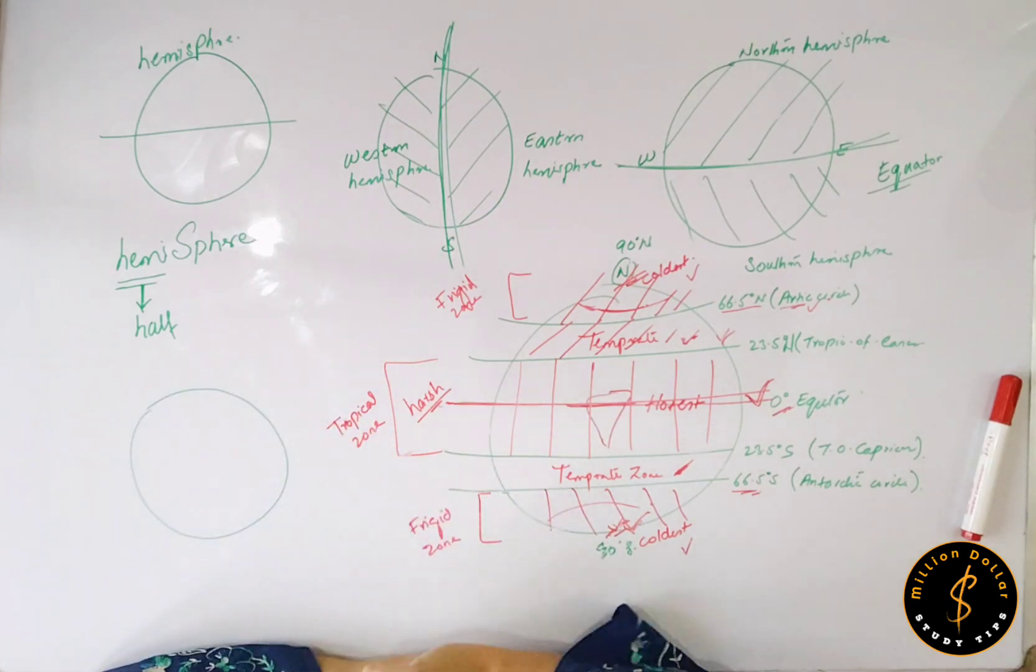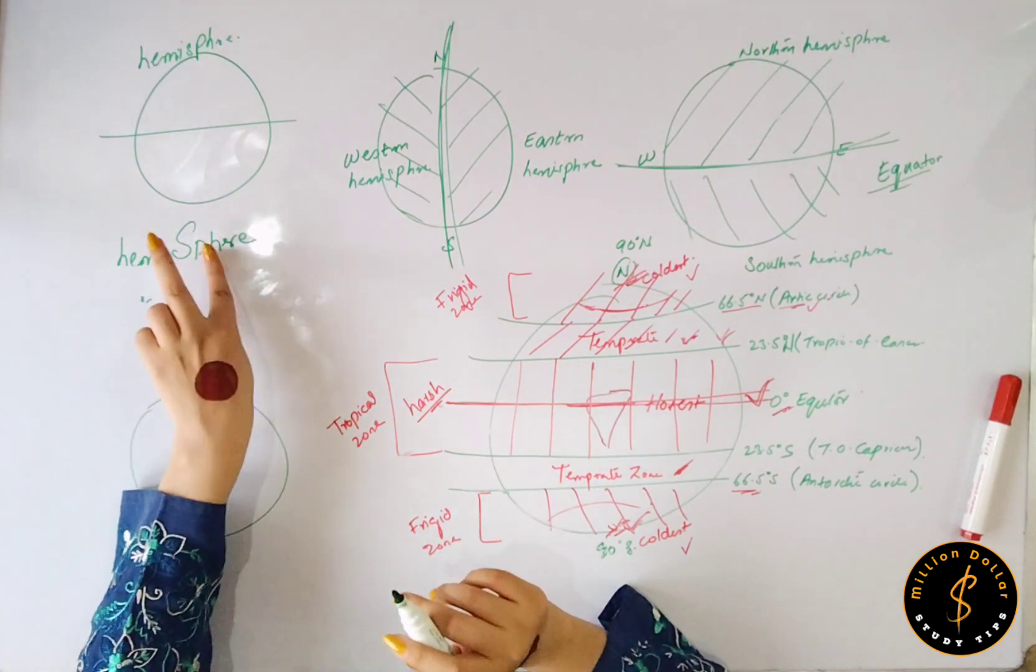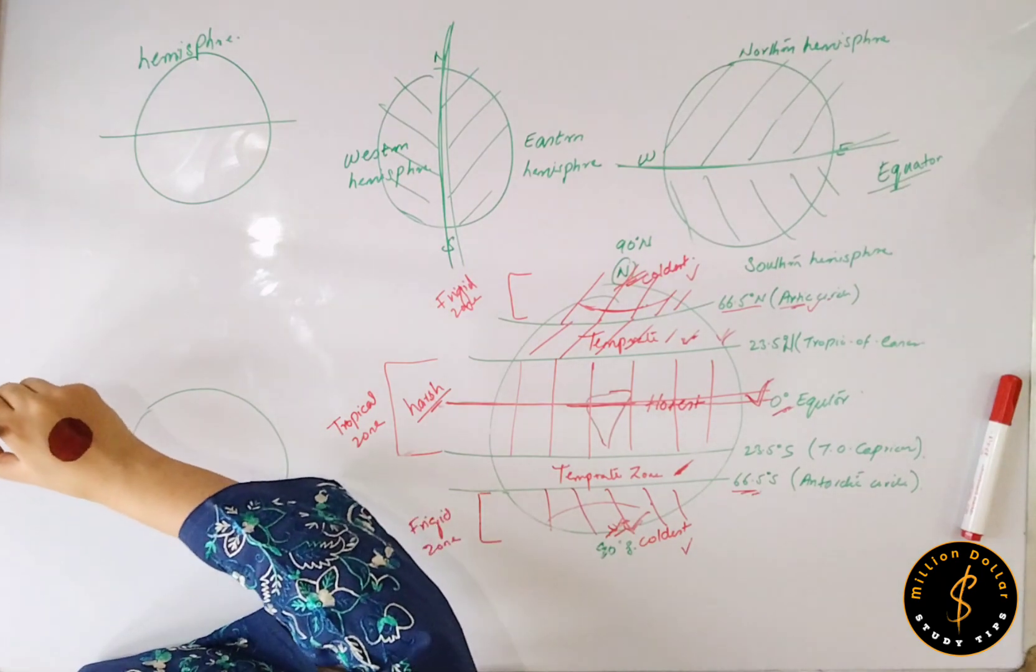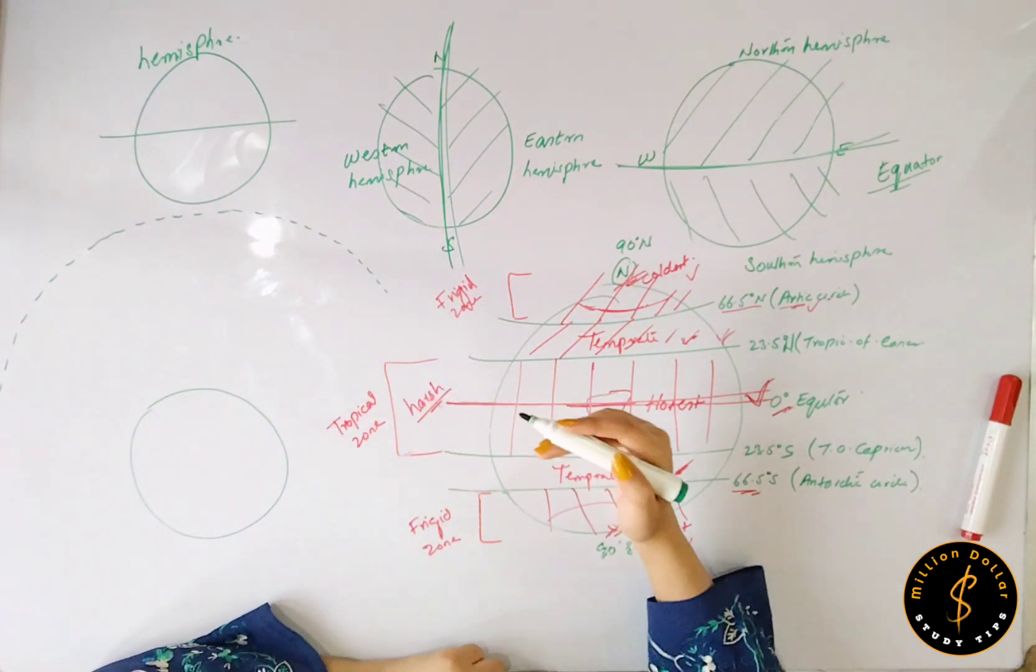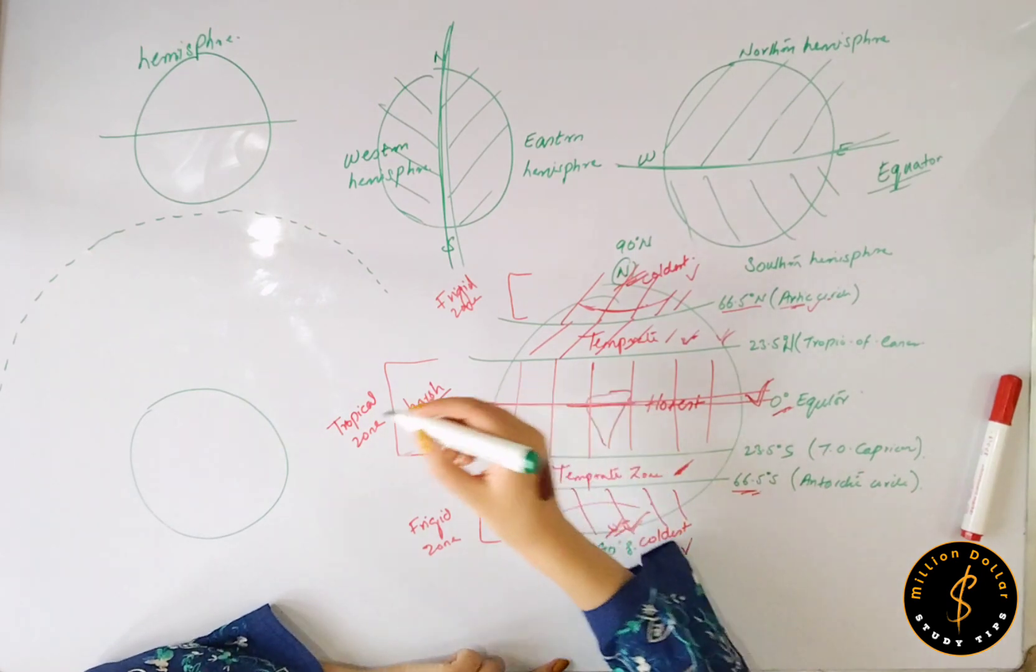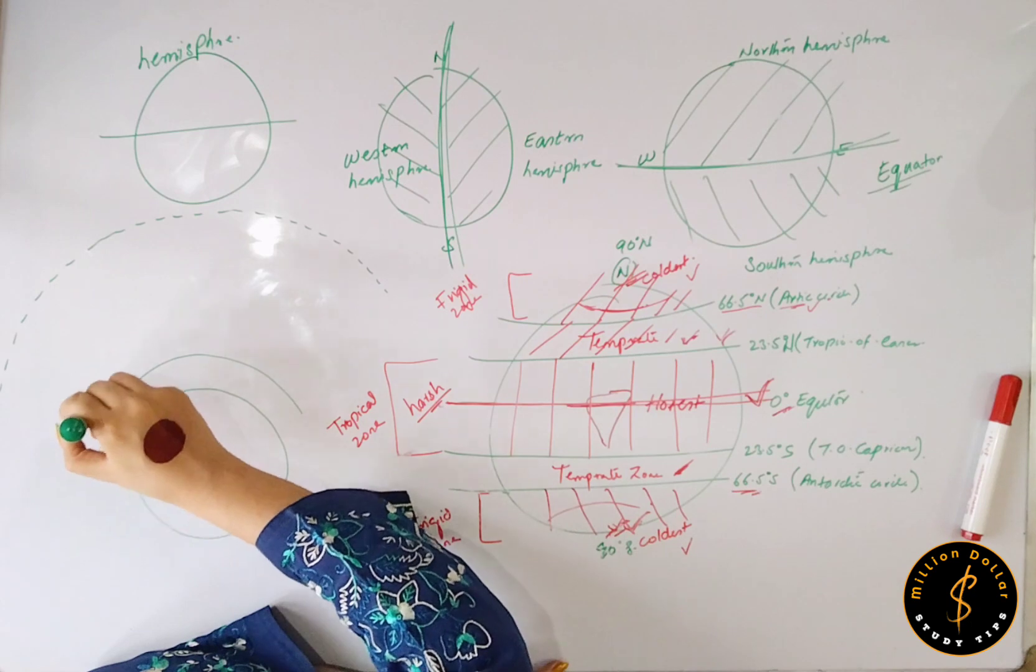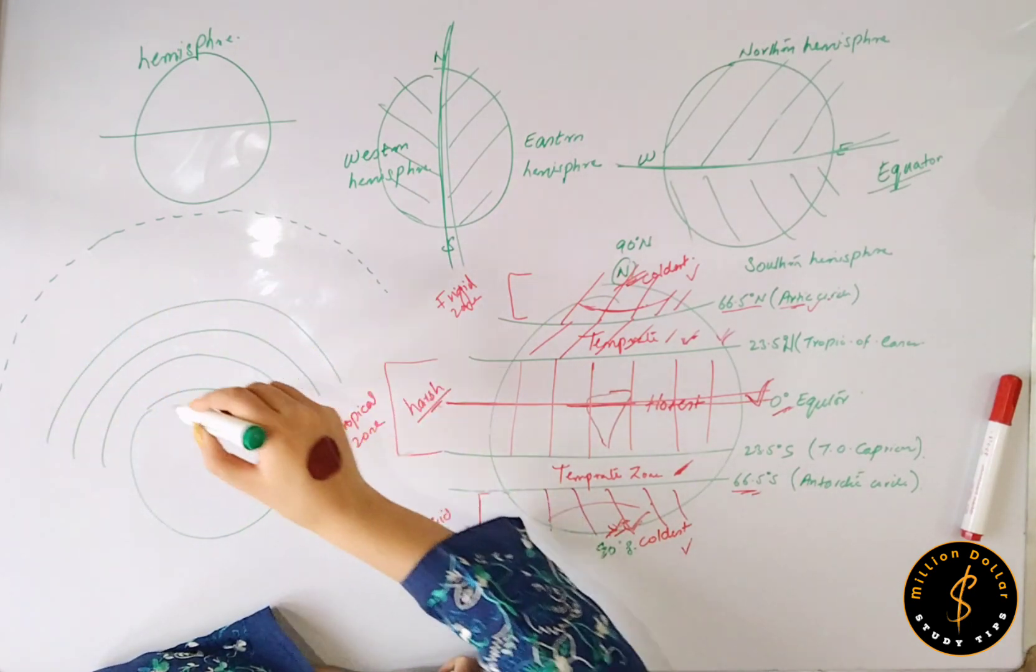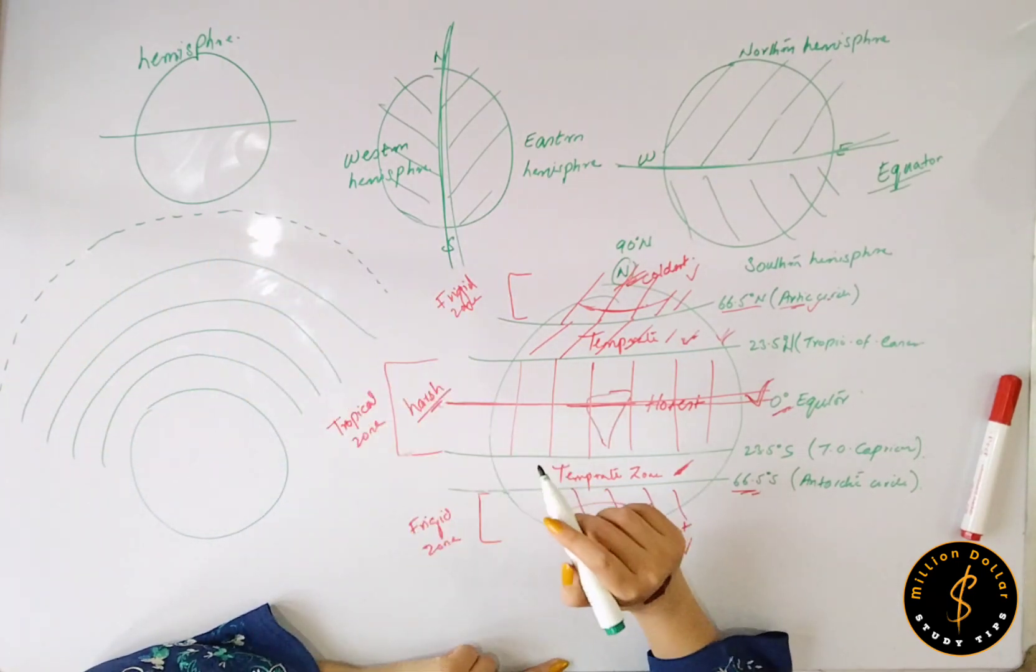This is your planet Earth. We divide the atmosphere into how many layers? Let's suppose this is up to 3000 kilometers, and we have five layers. This is your first layer, your second layer, this is your Mesosphere, Thermosphere, and this is your Exosphere.